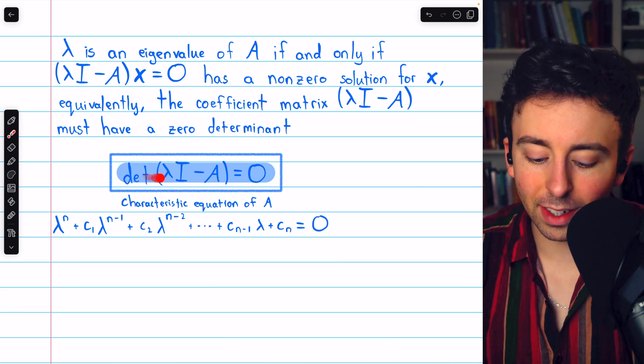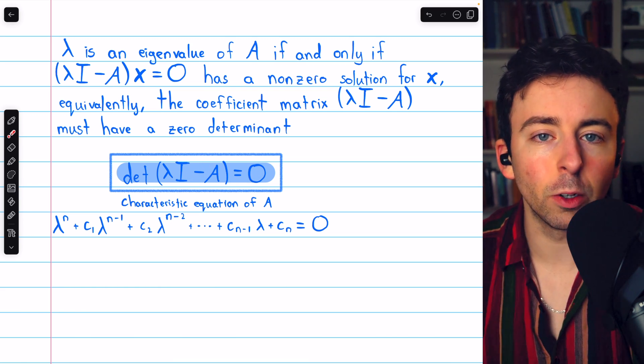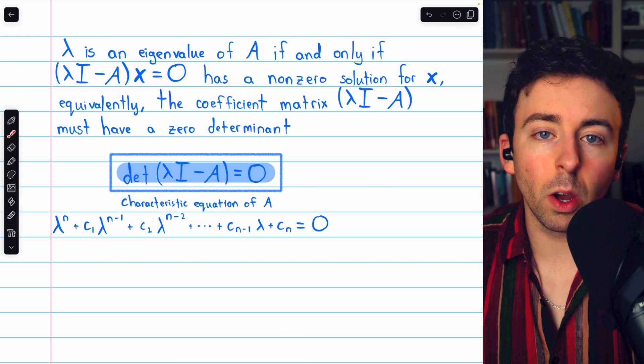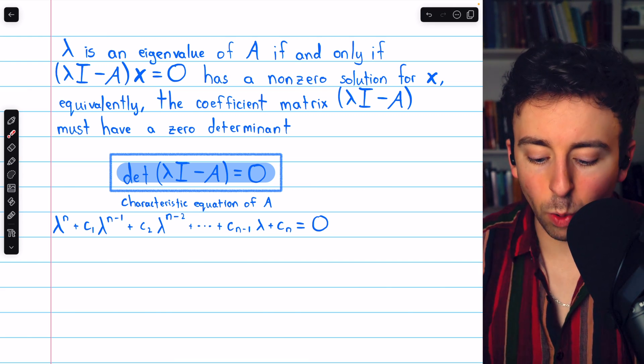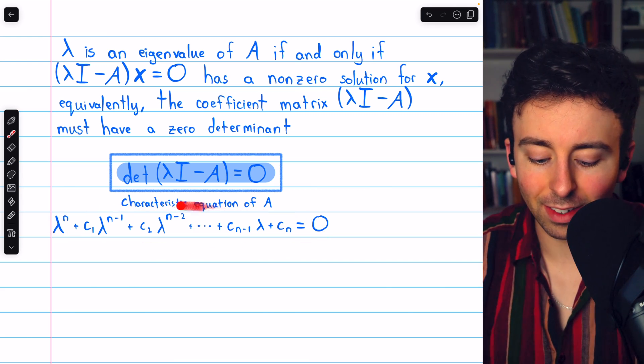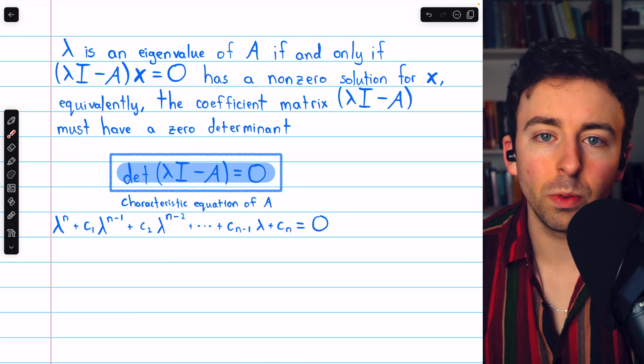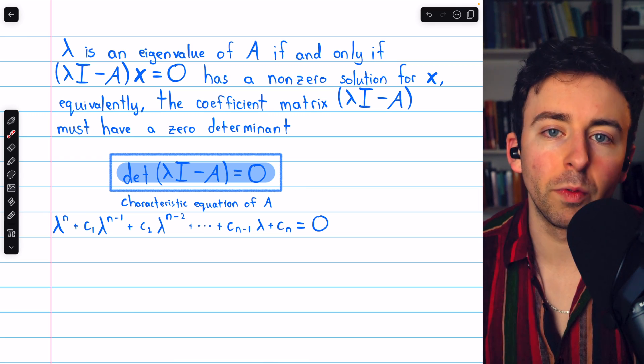So we take the determinant, set that equal to zero, and that's the characteristic equation. Once we go through the calculations, the equation looks like this. There's a link in the description to my lesson introducing eigenvalues and eigenvectors if you need to review some of this stuff.